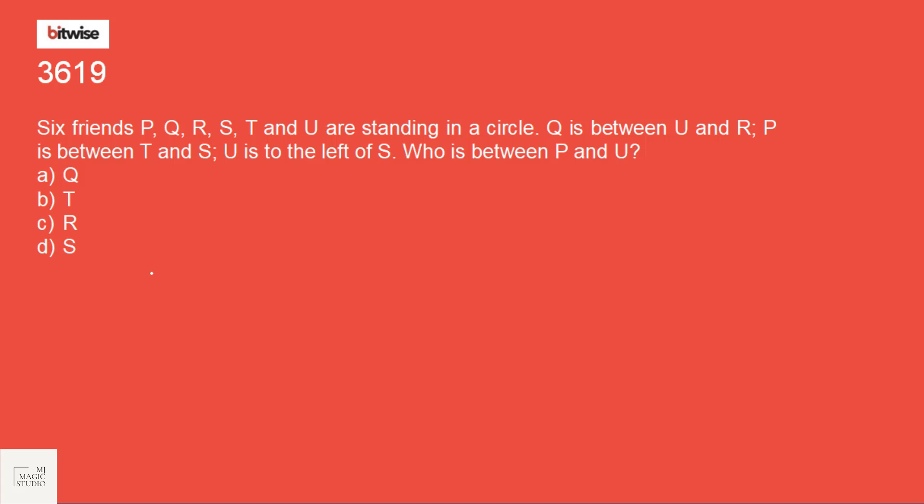So here we have the first one and it is from reasoning, verbal reasoning, 6 friends sitting arrangement. 6 friends P, Q, R, S, T and U are standing in a circle. Q is between U and R, P is between T and S, U is to the left of S. So we have S and to the left is U. And since nothing is given about like whether they are facing inside the circle or outside the circle, it's a normal assumption that we always assume that they all are actually facing inside the circle. So we have U to the left of S.